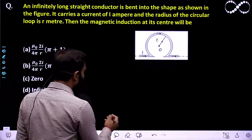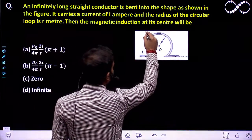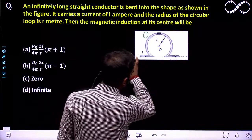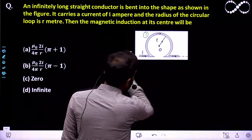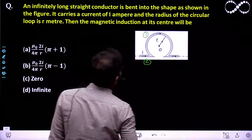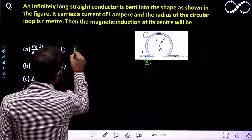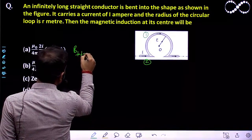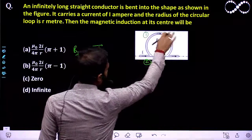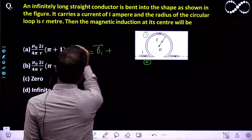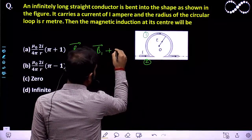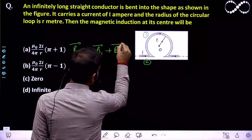In this figure, I am calling the circular loop as 1, and the straight conductor parts as 2. So the magnetic field B_total will be equal to B1 — the magnetic field due to the circular loop — plus B2, the magnetic field due to the second part of the circuit.